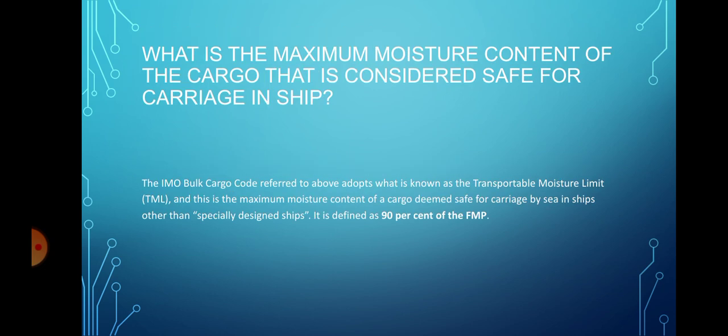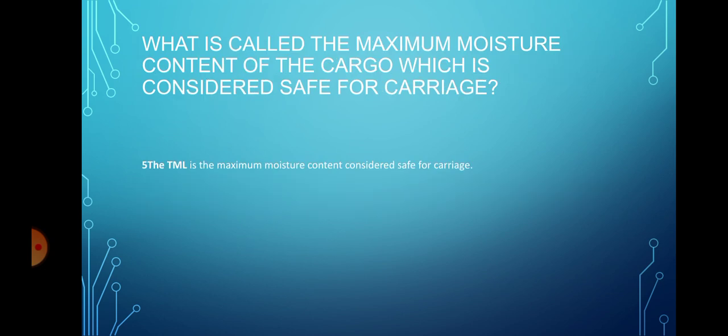What is the maximum moisture content of the cargo that is considered safe for carriage in a ship? The Bulk Carrier Code refers to this as the Transportable Moisture Limit (TML). This is the maximum moisture content of a cargo that is safe for carriage by sea in ships other than specially designed ships. It is defined as 90% of the FMP.